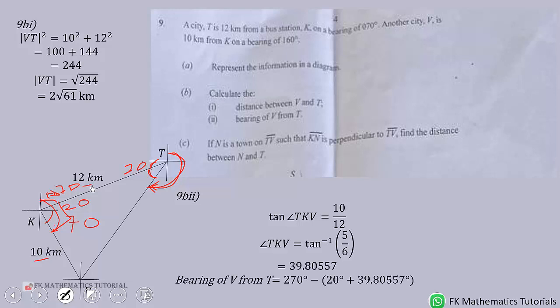Now the next question says that if N is a town on TV, on TV such that - so we drop a point from K to TV such that it is 90 degrees to it, and we call it N. Now we want to find TN, and that's what we're looking for.